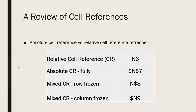A review of cell references shows us the differences between absolute cell references and relative cell references. A relative cell reference is one such as N6, indicating this cell is in column N, row 6. You have three versions of absolute cell references available. One is fully absolute — it will show both the column and row locked into place, shown here as $N$7, where the dollar sign in front of the letter for the column indicates that column is locked, and in front of the 7 for the row indicates that row is locked.